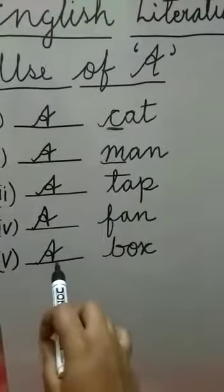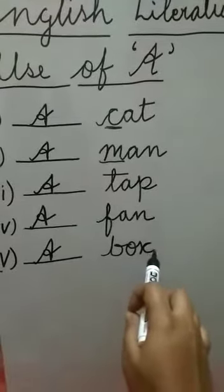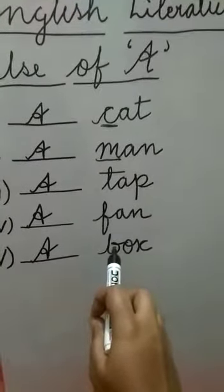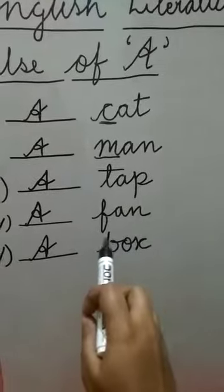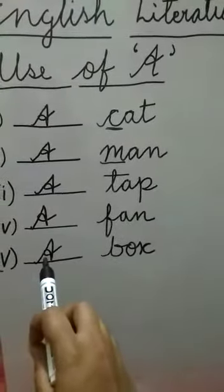Fifth one, A box, B-O-X, box. B is what? B is a consonant, it is not a vowel. So children, you will write here A.